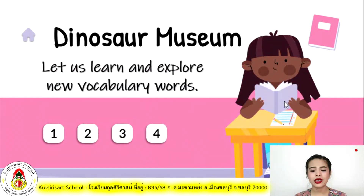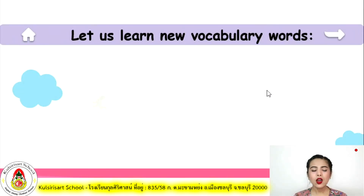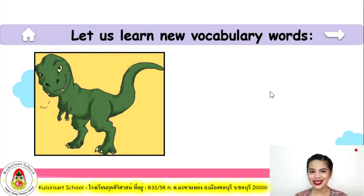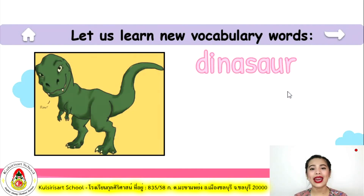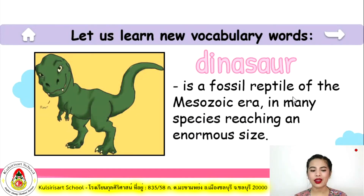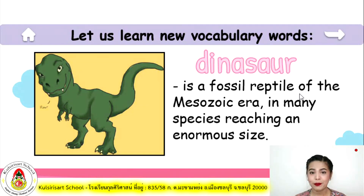Dinosaur Museum. Let us learn and explore new vocabulary words about dinosaurs and about museum. Picture number one — that is called a dinosaur. A dinosaur is a fossil reptile of the Mesozoic era, in many species reaching an enormous size. When you say enormous, that means very big. Some are very small.